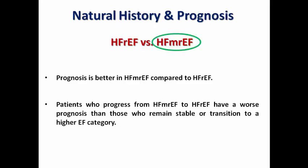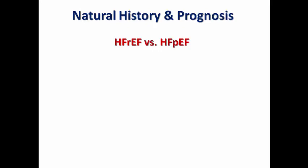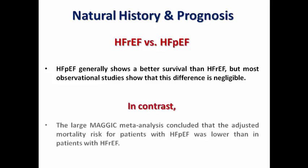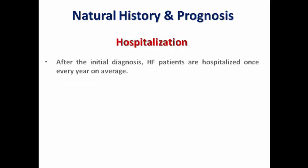Comparing reduced ejection fraction with preserved ejection fraction is more complex. Heart failure with preserved ejection fraction shows better survival than reduced ejection fraction, but most observational studies show this difference is not statistically significant. In contrast, the large MAGGIC meta-analysis concluded that the adjusted mortality risk for HFpEF patients was lower than for patients with reduced ejection fraction — so HFpEF may have a better prognosis, but more evidence is still needed.